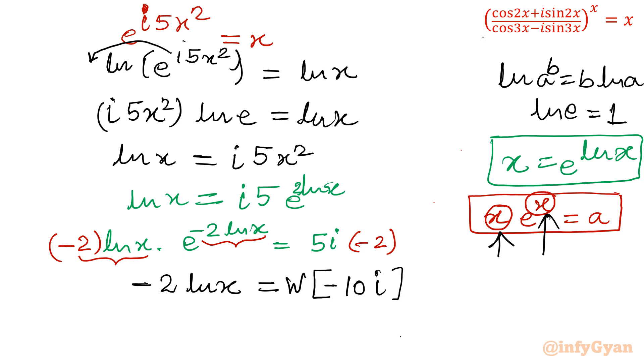ln x will become Lambert W function minus 10i over negative 2. We can write in exponential form: it will become e raised to the power W of minus 10i over negative 2. It is in power, exponent only.